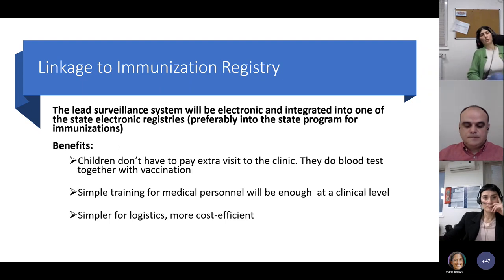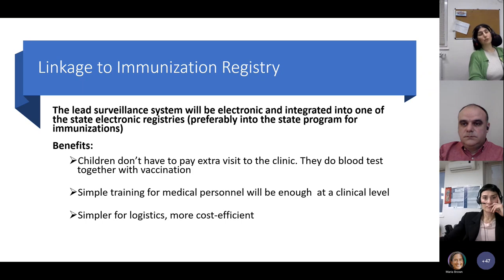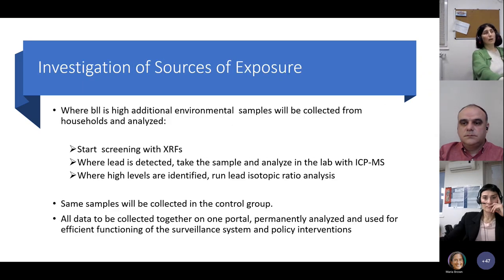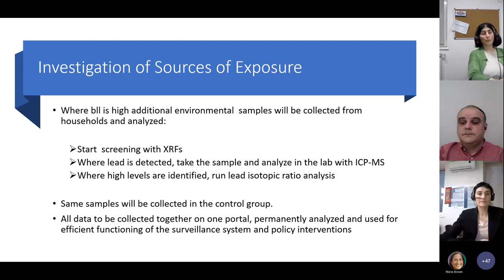The lead surveillance system will be linked to the immunization registry because it has almost 100% coverage and is electronic. Children already go to clinics for mandatory immunization, so there is no need for an extra visit — blood tests can be done together with vaccination. This proposed methodology allows simple training for medical personnel and simple logistics, making it more cost-efficient. Where high BLLs are detected, environmental samples will be collected and compared with control group samples. All data will be collected on one electronic portal and analyzed regularly, with evidence used for further policy interventions.